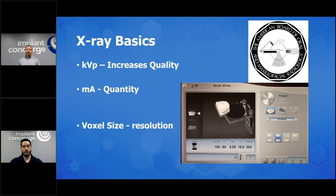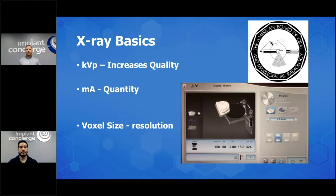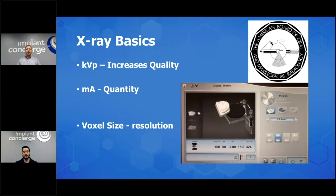When it comes to KVP and MA, I'm not going to talk about the physics behind it, but basically these numbers can be adjusted on pretty much all machines. Description is a clinical situation where if you have two patients — one has a lot of restorations, we're talking about implants, amalgam, PFMs — versus a patient that has none of that. When you hit the button and the KVP and MA is already pre-decided, that patient with a lot of restorations is going to have a lot of scatter, a lot of beam hardening. Just changing those numbers a little bit, you're going to get a much better image.